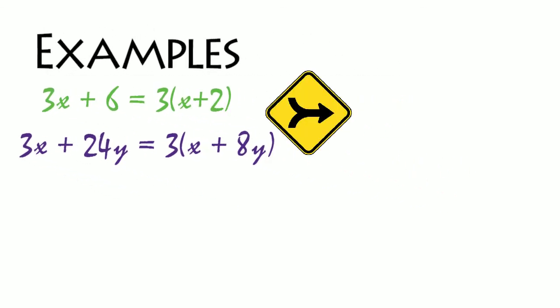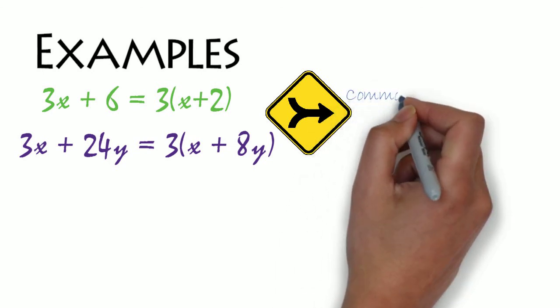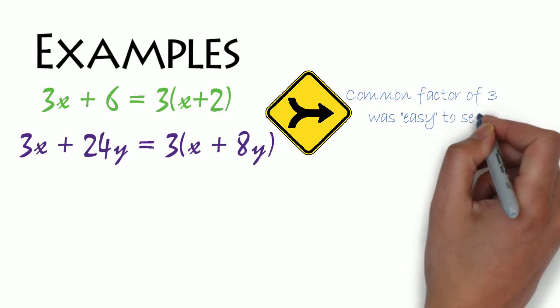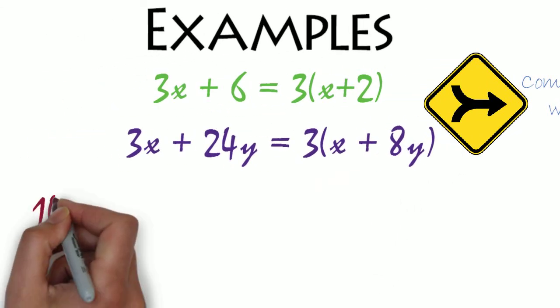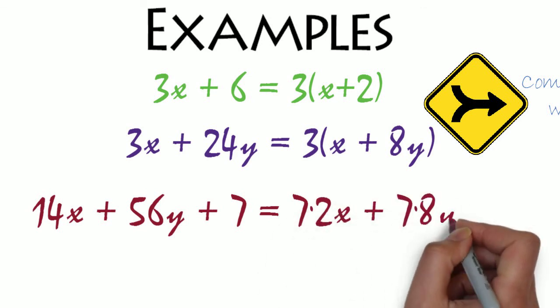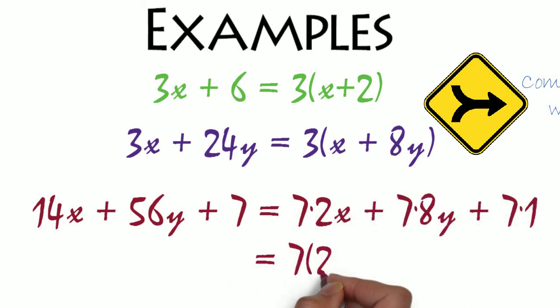It's not always easy, however, to see what common factor needs to be factored out. Sometimes we want to explicitly factor each term before undistributing a common factor, as with this factor of 7.